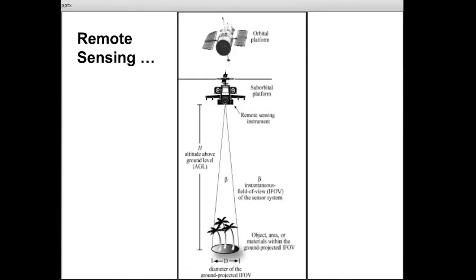Going into more detail on satellites: a remote sensing instrument collects information about an object or event within its instantaneous field of view. In this picture, an object on the Earth such as vegetation is observed by a remote sensing sensor on a suborbital platform like an aircraft or spacecraft. The height of the satellite platform and the instantaneous field of view determine both the quality and quantity of information you can obtain.